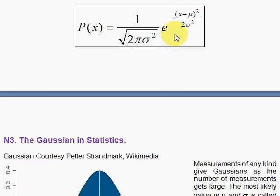Notice that if the standard deviation sigma is small, that means sigma squared is small — your variance. And if you divide by a small number, you get a big number. e to the minus a big number is very, very small, close to zero. So what happens in that case is your graph is very, very narrow, and you have to be very close to the mean to get some value that's away from zero.